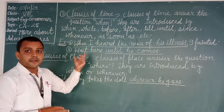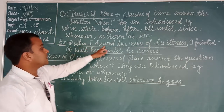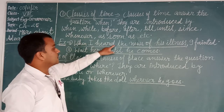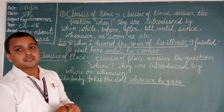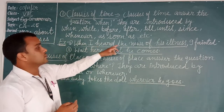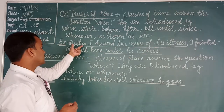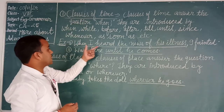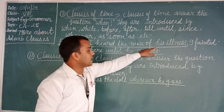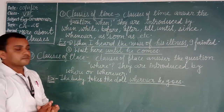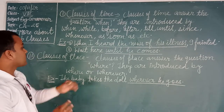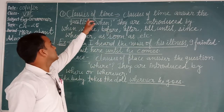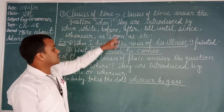For better understanding, see the example: 'When I heard the news of his illness, I felt sad.' The conjunction 'when' shows it is a clause of time. Another example: 'Wait until it comes.' The conjunction 'until' also shows a clause of time.